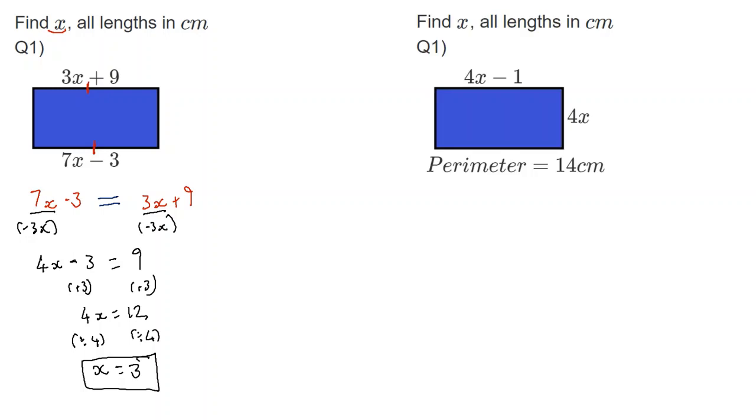Next type of problem. Now, we can't tackle this problem in exactly the same way. The reason being, although I know this side is 4x minus 1, this side I don't really know. But this time, I am told something helpful. I am told the perimeter. Now, perimeter, as we should all know, is all of the outside of the shape added together.